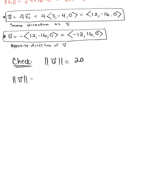So finding this magnitude, we have vector U, and we can actually evaluate both vectors simultaneously. We can say this is the square root of plus or minus 12 squared plus plus or minus 16 squared plus 0 squared.